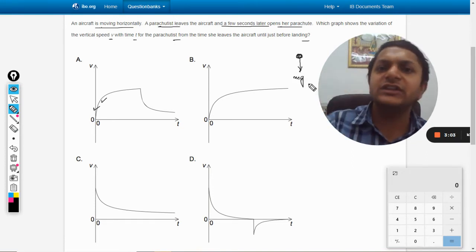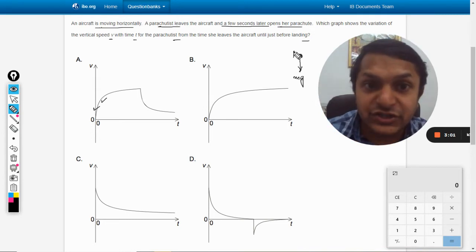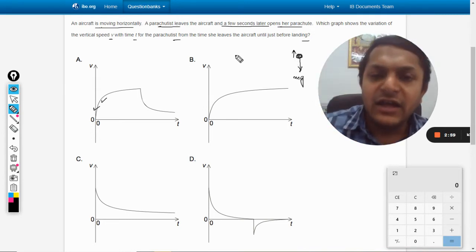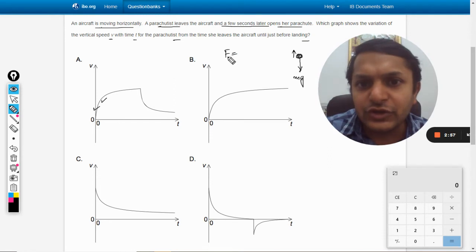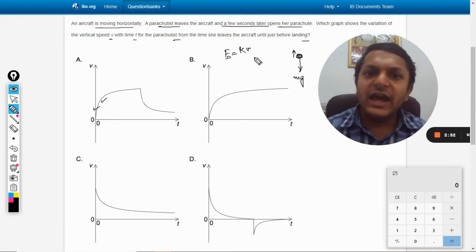Immediately the force due to the earth is mg, but the drag force is not there. It is increasing. The drag force is generally given by the formula k into v, where k is a constant and v is the velocity.